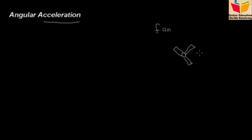Or, if you look at a rotation, you can also reduce the speed. Now, this thing is that the angular velocity of the rotation is changing. If you switch on or off, you can note that the velocity is changing.